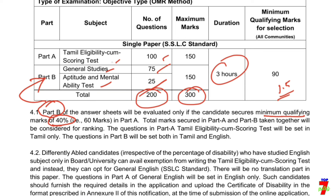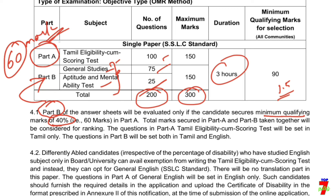In Part A, there are 40 percentage — that's 60 marks. So if you add the number of them, in Tamil, then you have to consider Part B. The number of them is very important — there are 100 questions.